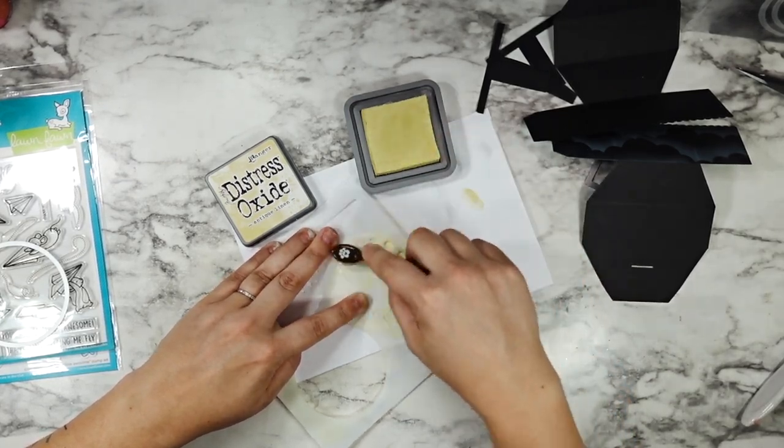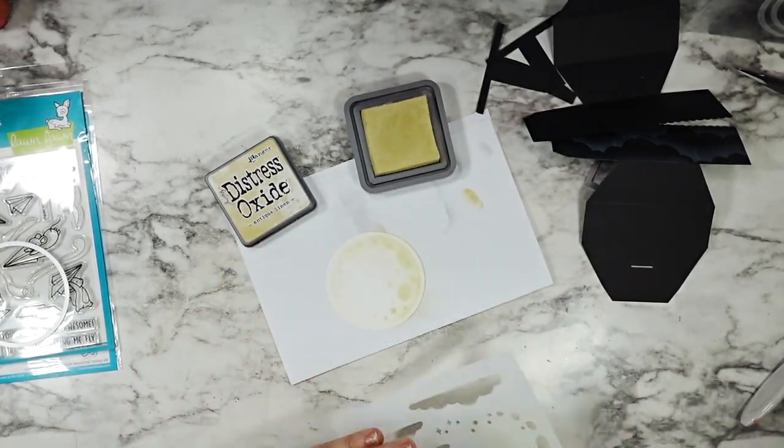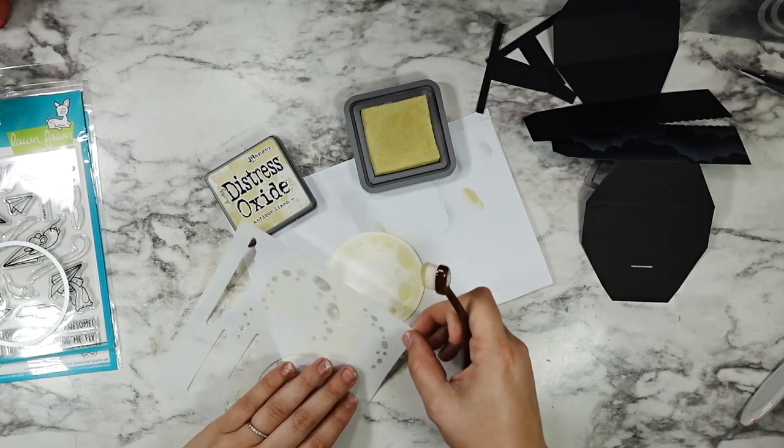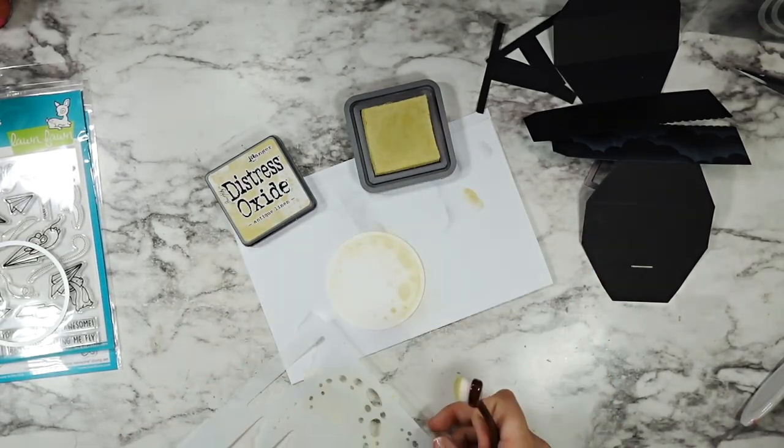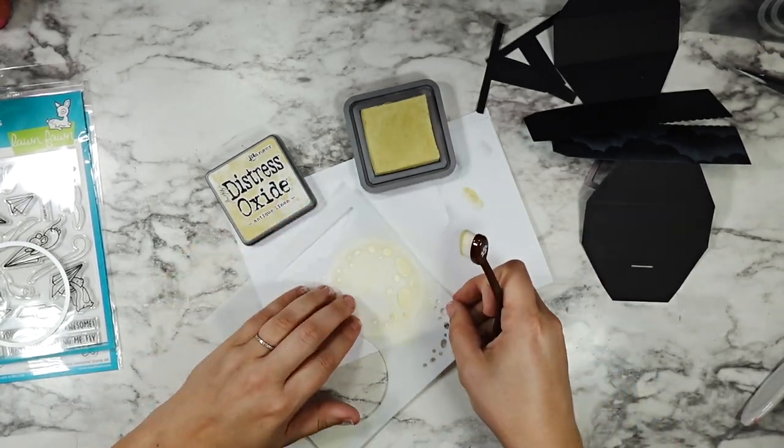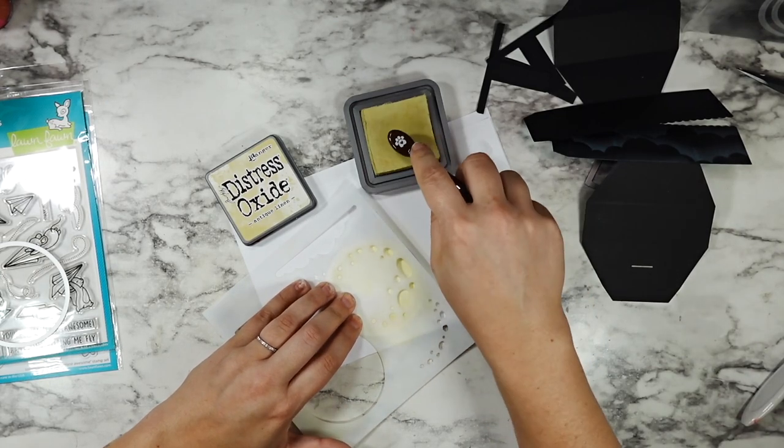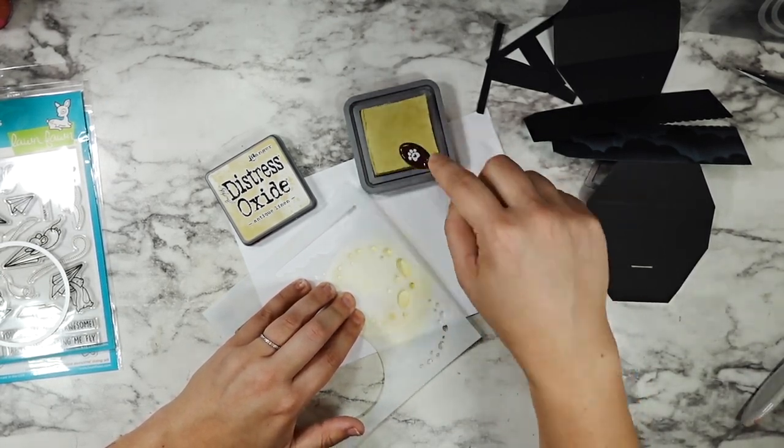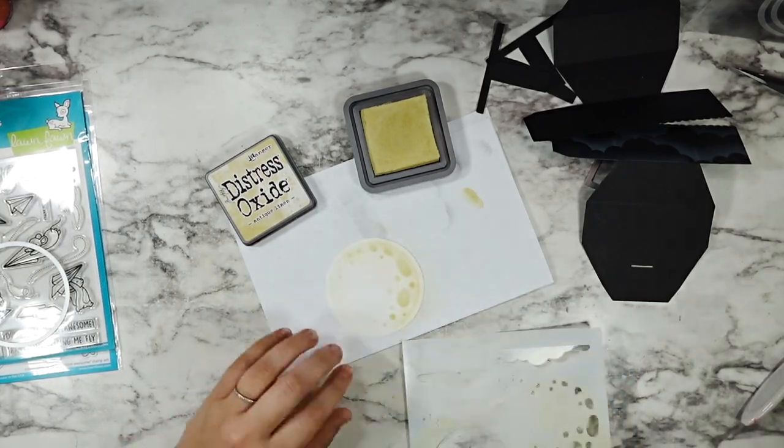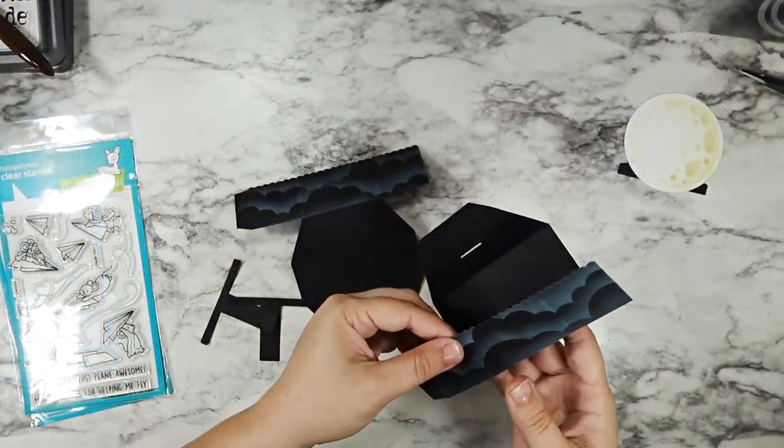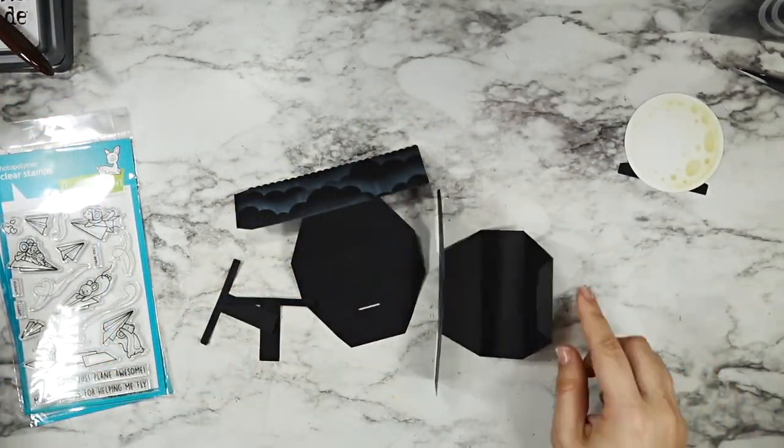So I go in with my antique linen on that whole circle first, then add in some of those craters and add a second layer of my ink. I didn't think those craters were dark enough so I put my stencil right back in place and added just a little bit more of that ink, and then I was absolutely in love with how this part of the moon turned out.